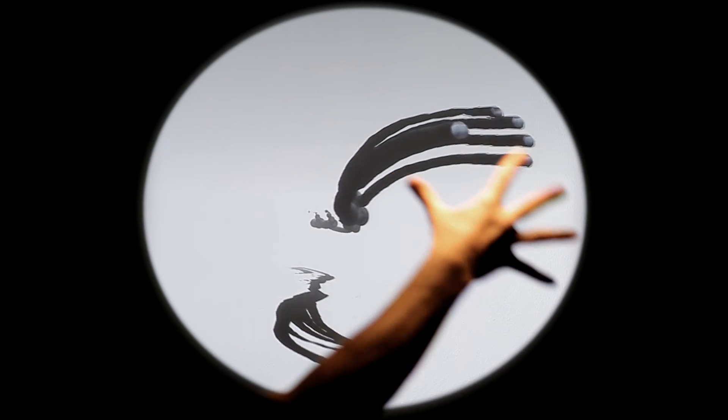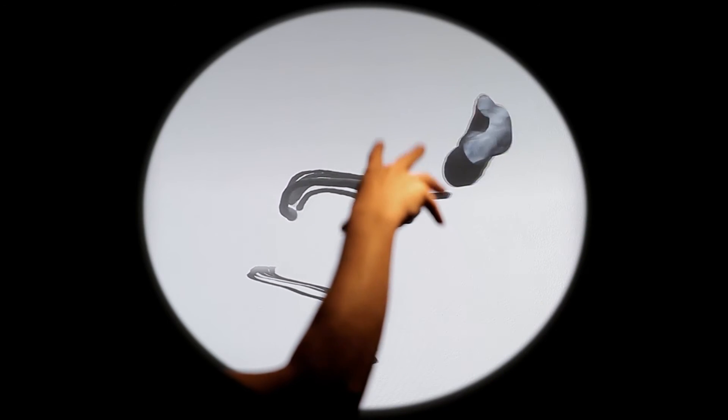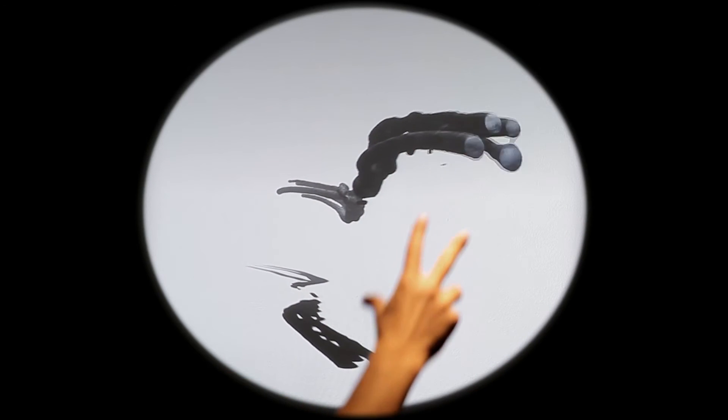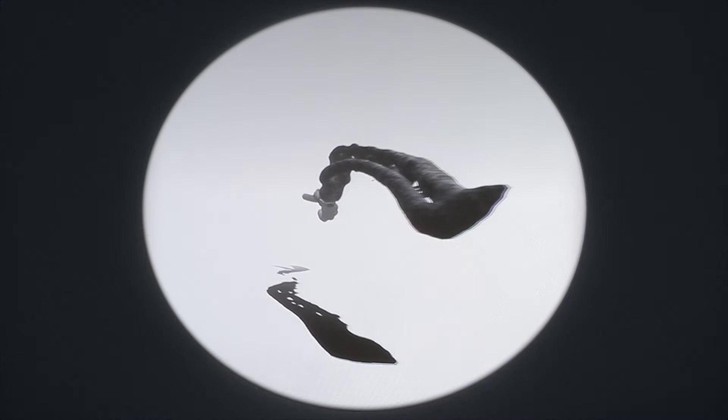The motions of fingers create circular shapes in space which evolve to flowing sculptures over time. Motions substantiate as sonified spatial structures.